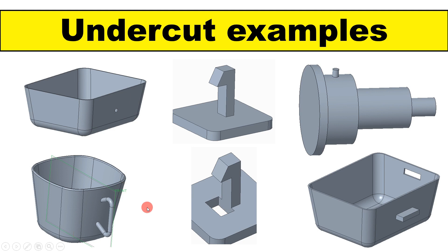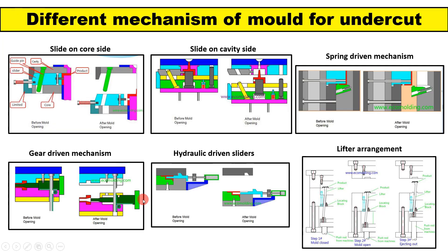If we are unable to avoid the undercut in the design, we have different options to manufacture undercut parts. We use slider and lifter arrangements — these are side actions. While a standard mold has only two actions (top and bottom), for undercuts we use side actions like sliders and lifters. Here you can see different slider arrangements, such as slides on the core side.